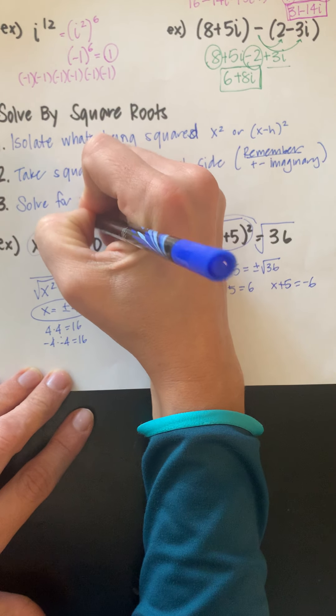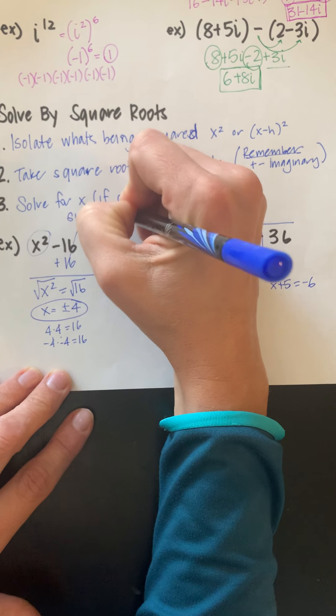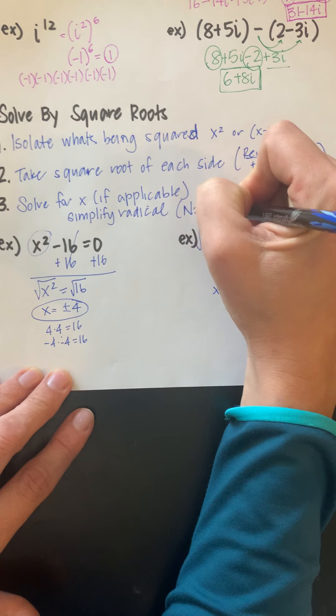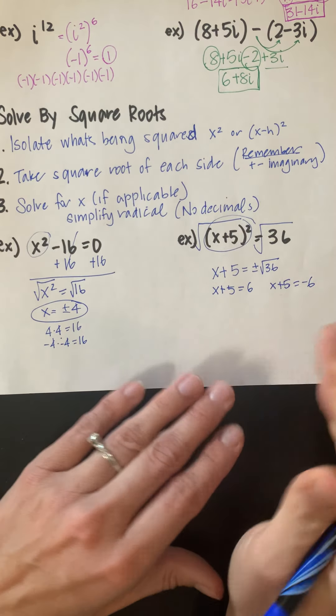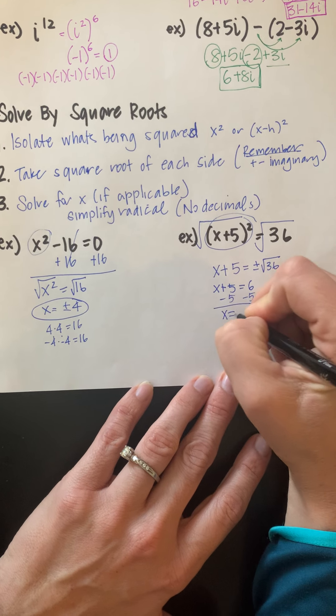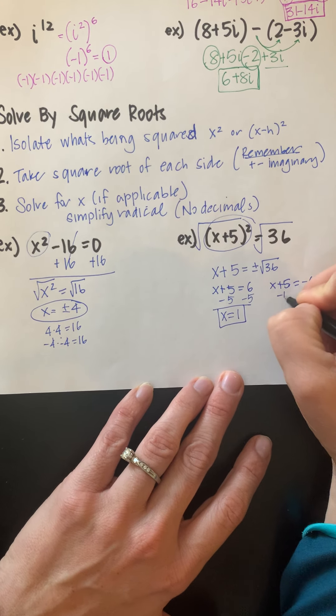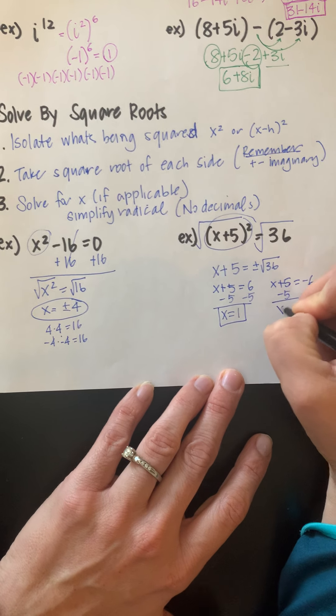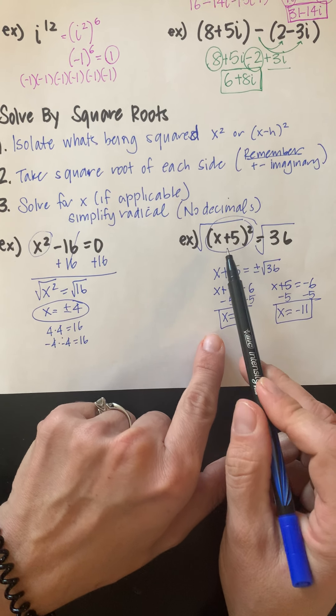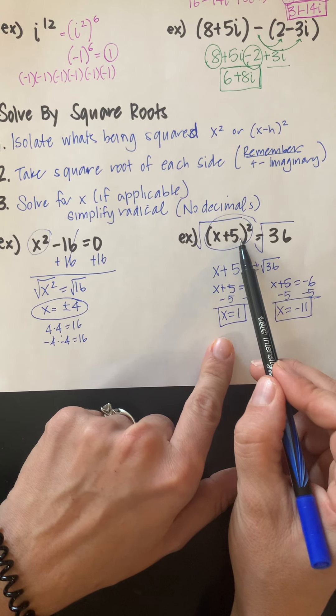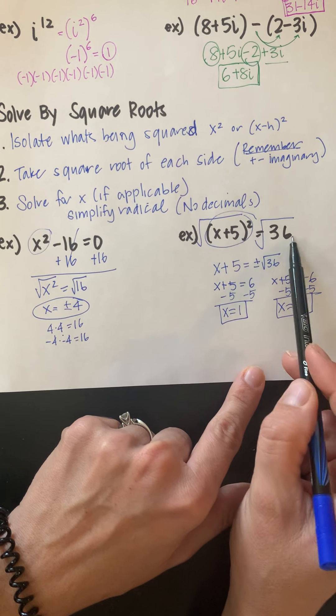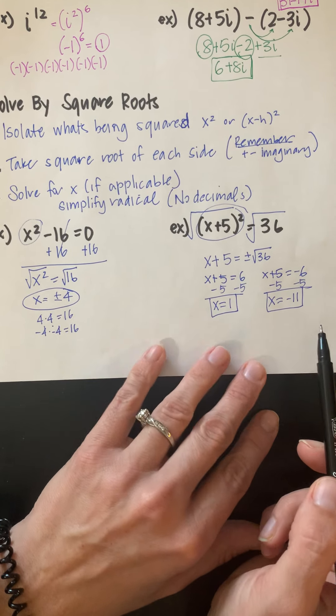If you need to simplify the radical, please do. We don't want decimals. So x ends up being 1, but it also ends up being negative 11. You could try both of those answers back in this original problem, and it would work. Because 1 plus 5 is 6, squared is 36. Negative 11 plus 5 is negative 6, squared would also be 36. So we need both answers.